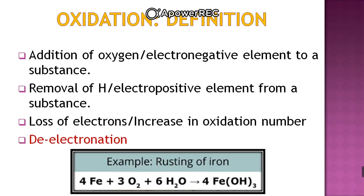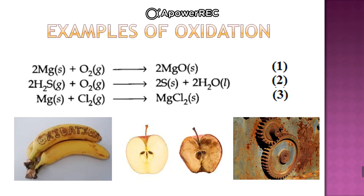The most famous example is rusting of iron. Rusting of iron is an oxidation process. Other examples include oxidation of bananas, apples, and rusting. In equation number one, the chemical reaction between magnesium and oxygen — oxygen is getting added to magnesium. So we say that magnesium is getting oxidized; oxidation is happening in this reaction.